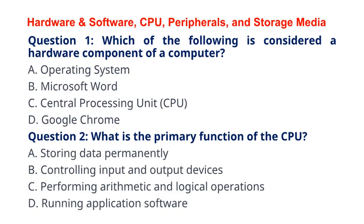Question 2: What is the primary function of the CPU? A. Storing data permanently, B. Controlling input and output devices, C. Performing arithmetic and logical operations, D. Running application software. The correct answer to question 2 is option C: Performing arithmetic and logical operations. Explanation: The CPU executes instructions and performs arithmetic and logical operations, acting as the brain of the computer.